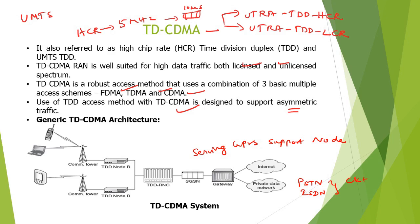In today's lecture we are going to see about Time Division Duplexing Code Division Multiple Access, which is TD-CDMA. TD-CDMA works with a high chip rate with time division duplexing. It can also be used with UTRAN network with time division duplexing with a high chip rate as well as low chip rate. We prefer high chip rate — in the sense it can work with a frequency of 5 megahertz, and each time slot can be divided with respect to 10 milliseconds.